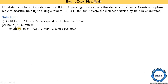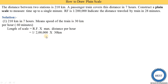Next, we find the length of the scale — what is the length of the scale in the drawing. The length of scale equals RF multiplied by the maximum distance per hour. RF is 1 divided by 2 lakh, and the maximum distance per hour is 30 kilometers, since we need to draw a scale for 60 minutes. The answer we get is 15 centimeters.